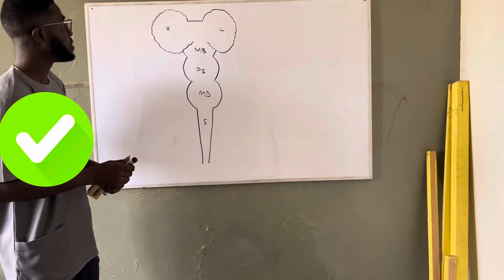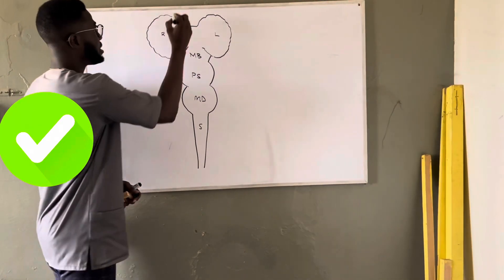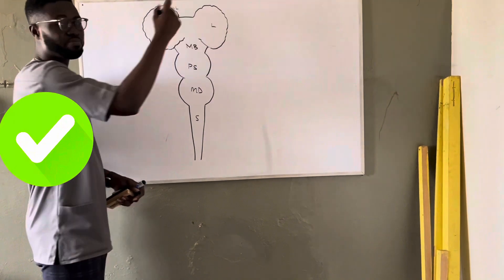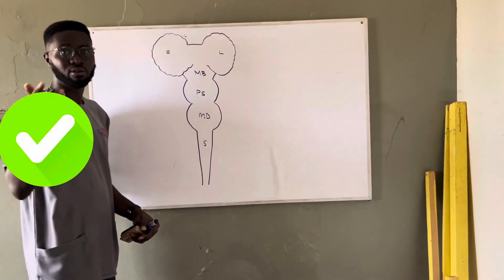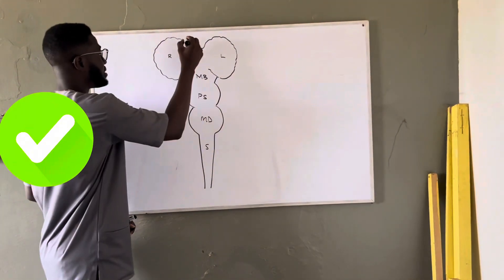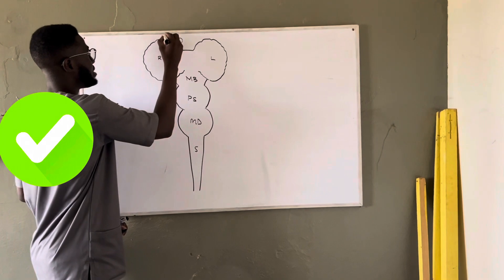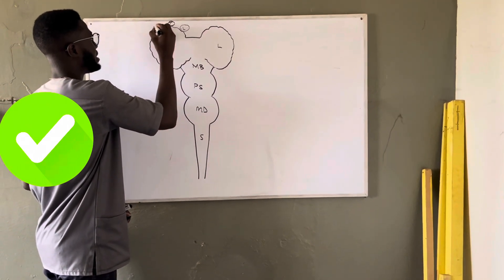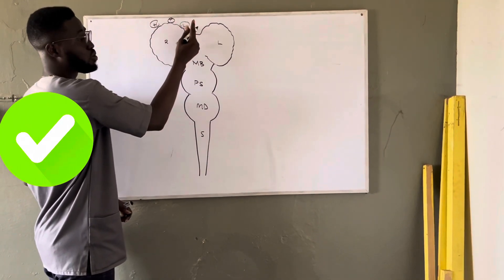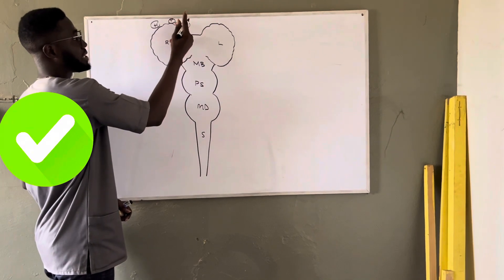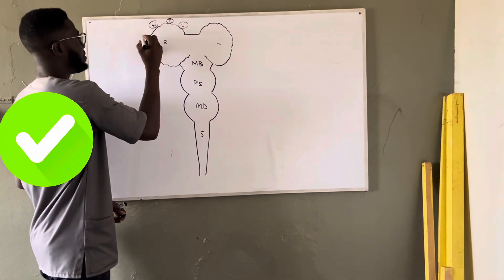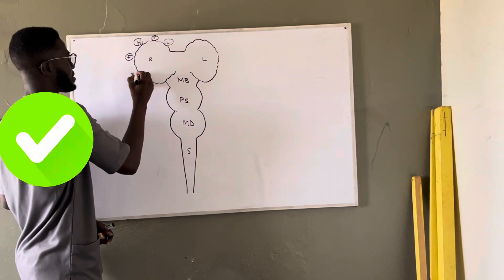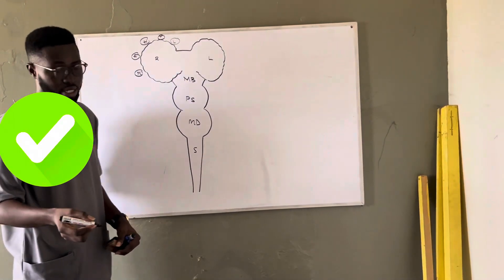From the motor homunculus, we have the various parts of the body represented on the brain. So this is the leg — the lower leg, the thigh — then the trunk, the hand, we have the face, we have the mouth, the tongue, and all that.